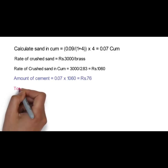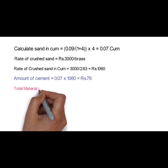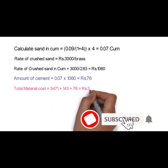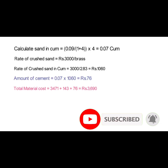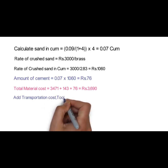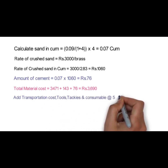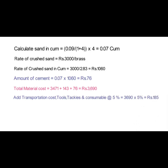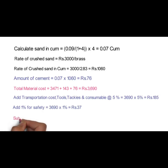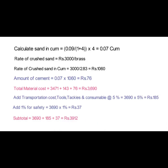Now the total material cost shall be 3,471 + 143 + 76 = 3,690 rupees. Now add transportation cost, tools, tackles, and consumables at 5% on the material portion: 3,690 × 5% = 185 rupees. Add 1% for safety on material part: 3,690 × 1% = 37 rupees. Now the subtotal is 3,690 + 185 + 37 = 3,912 rupees.